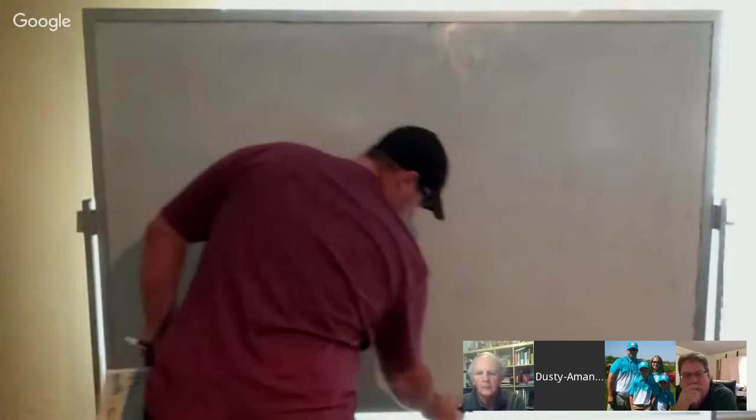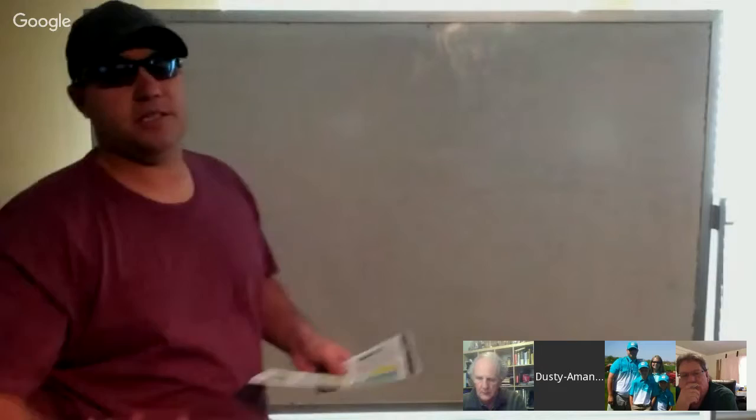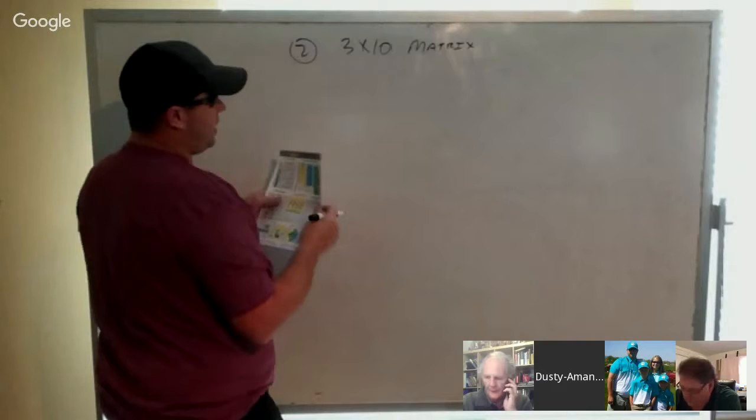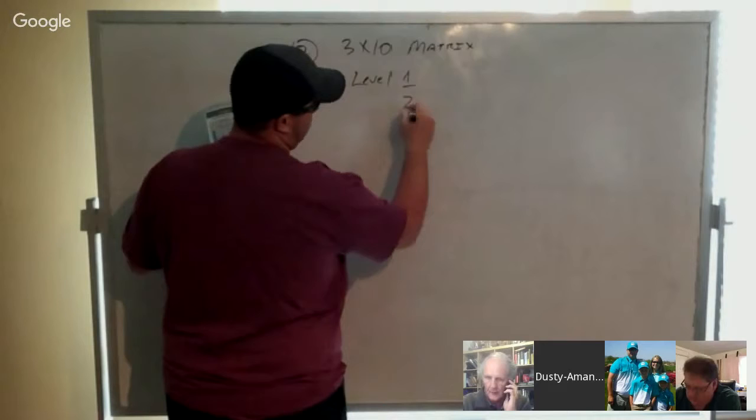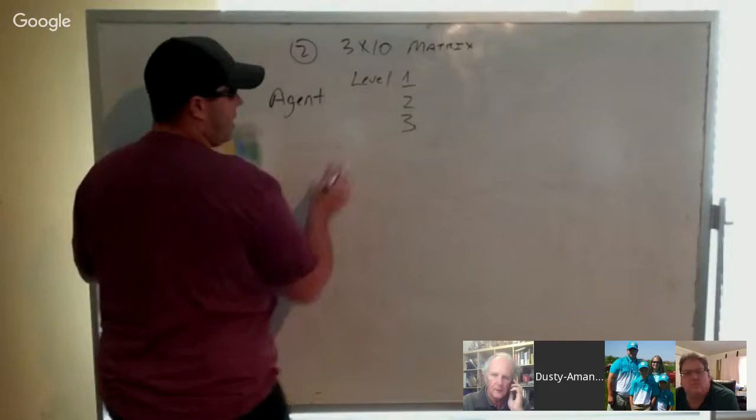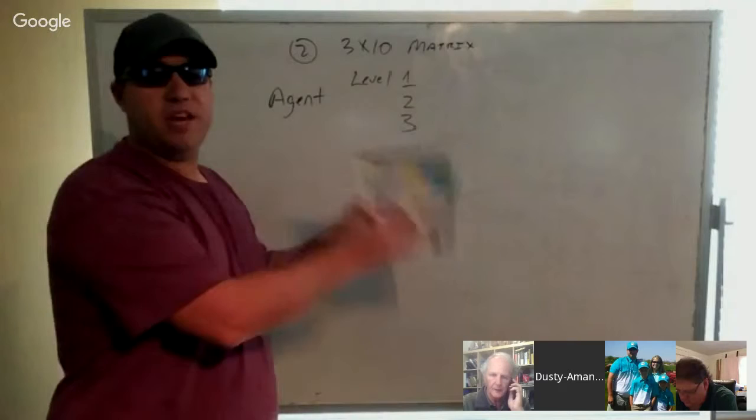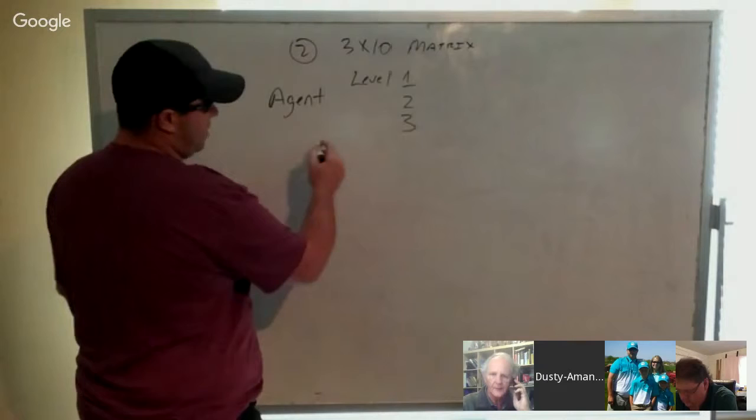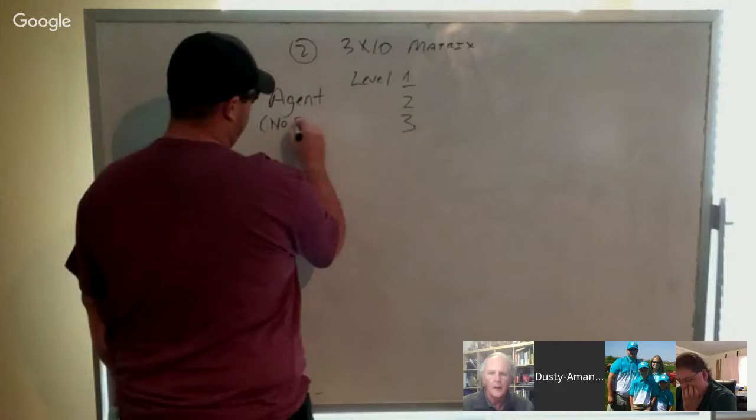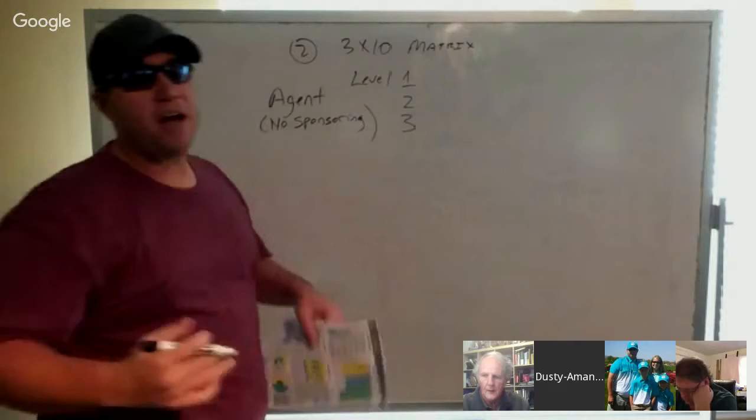Second part of our comp plan is probably the most unique because you don't really see a matrix that's designed quite like this. So the three-by-ten matrix looks something like this. Once again, level one, two, and three. All you have to need is an agent. An agent defined is anyone that's recruited zero to two people. They qualify for the first three levels of the matrix. So why is that unique?